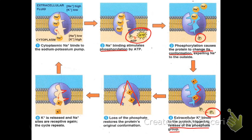This cycle repeats over and over: three sodium out when ATP is added, two potassium in, releasing the inorganic phosphate. The protein is phosphorylated, consumes energy, releases sodium, takes in two potassium, and releases the inorganic phosphate again and again. There are many, many of these pumps in your cells. This is a very common sodium-potassium pump, and you'll see it in a nerve cell in just a second.